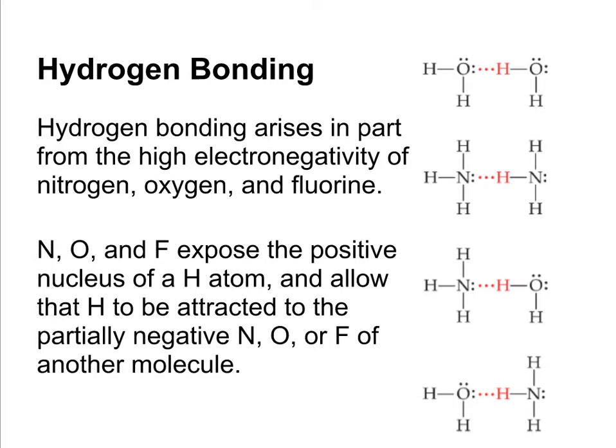The first one is hydrogen bonding. Hydrogen bonding arises in part from the high electronegativity of nitrogen, oxygen, and fluorine. In a hydrogen bond, a nitrogen, oxygen, or fluorine exposes the nucleus of a hydrogen atom and allows that hydrogen to be attracted to the partially negative nitrogen, oxygen, or fluorine of another molecule. So we can only have a hydrogen bond between a hydrogen atom of one molecule and a nitrogen, oxygen, or fluorine of a separate molecule.